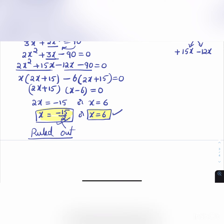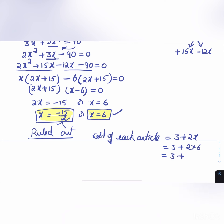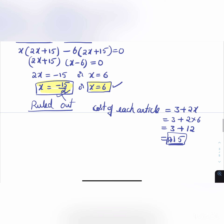The cost of each article = 3 + 2x = 3 + 2(6) = 3 + 12 = ₹15. So 6 articles were produced and each cost ₹15.